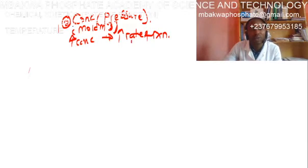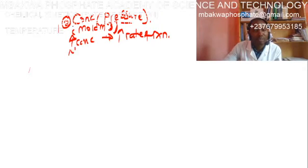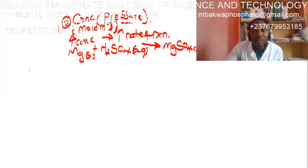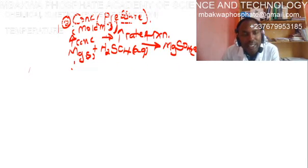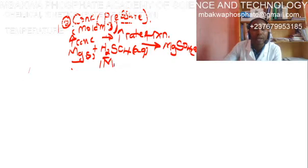Increasing the concentration also means we are increasing the pressure. Let us take an example: the reaction between magnesium metal plus sulfuric acid (aqueous) to give us magnesium sulfate (aqueous) plus hydrogen gas. Remember that metals displace hydrogen from acids.